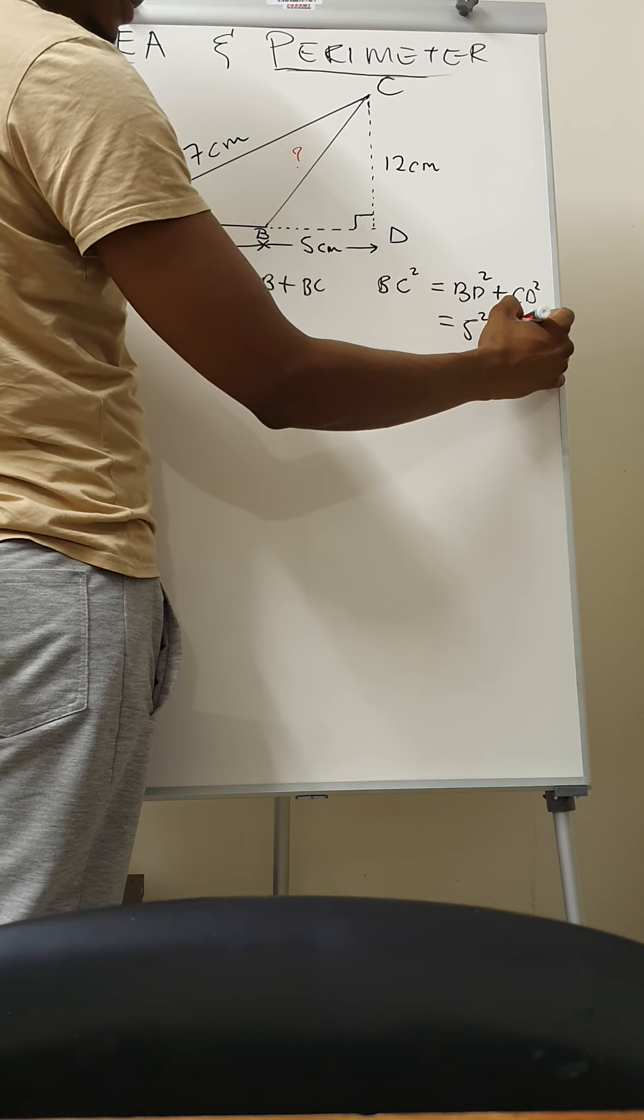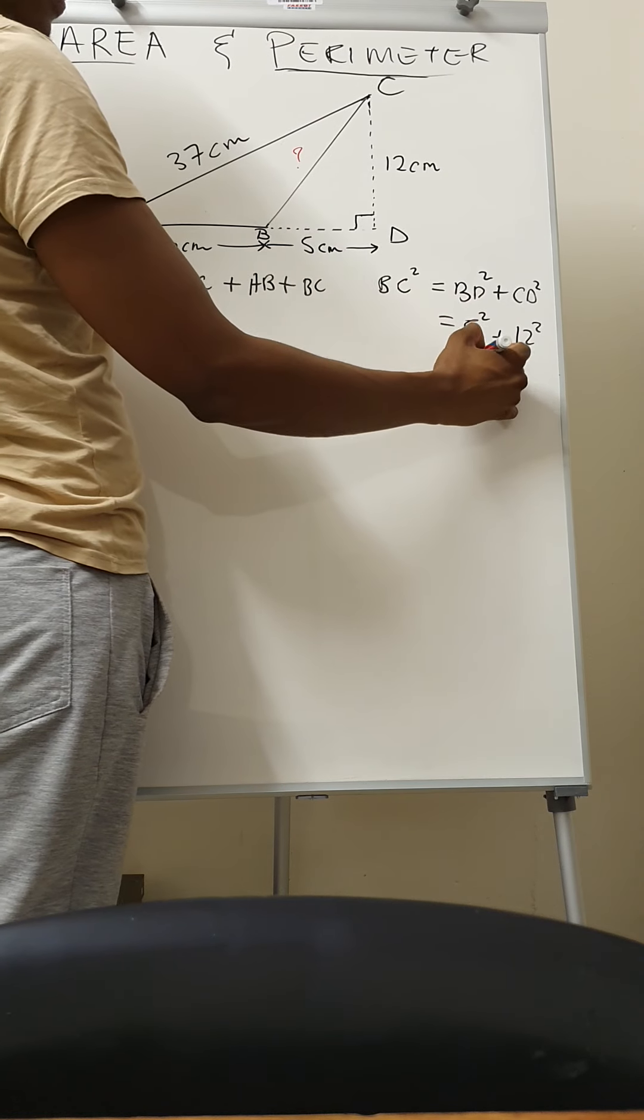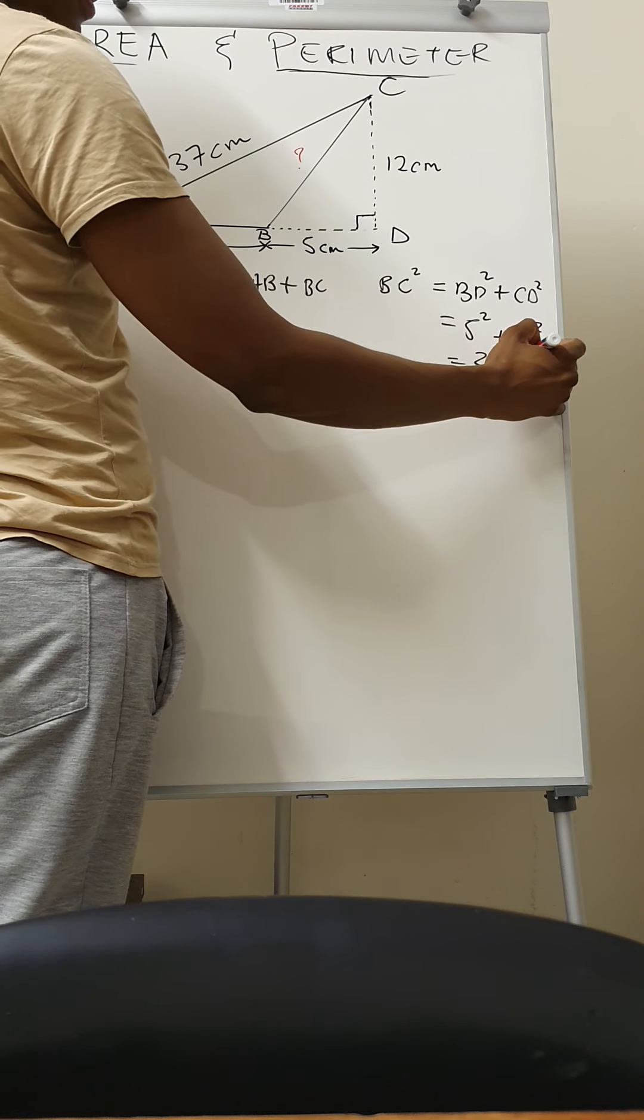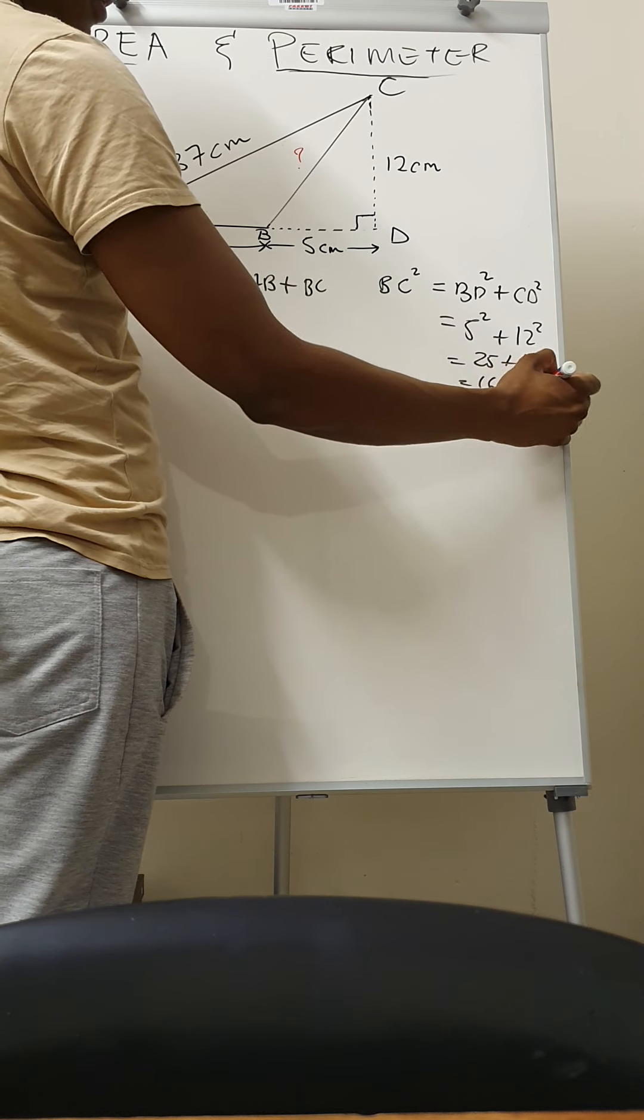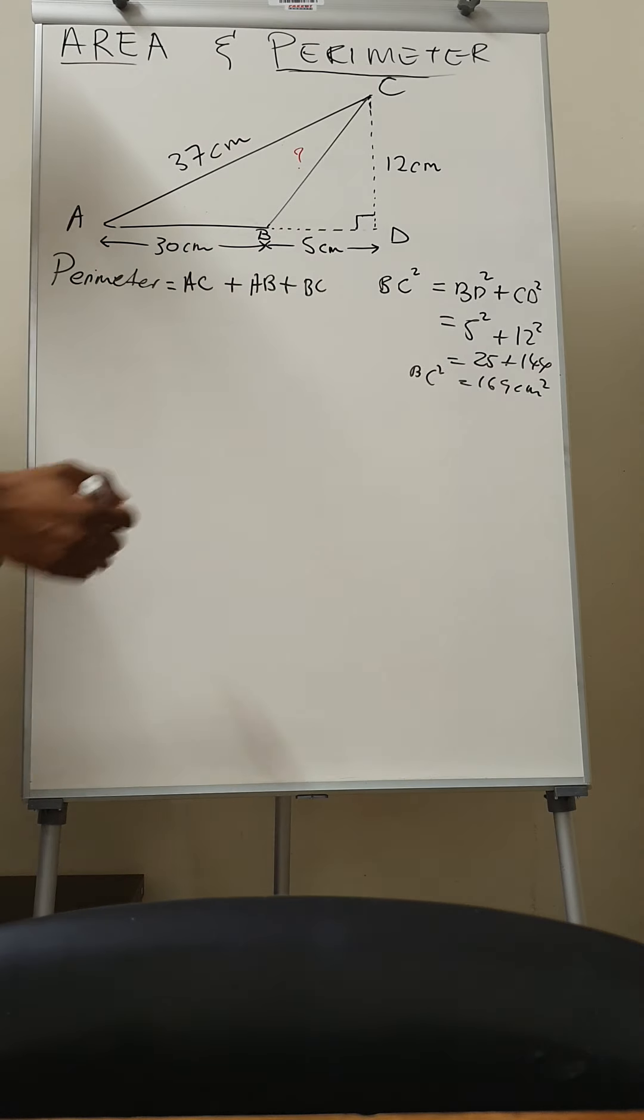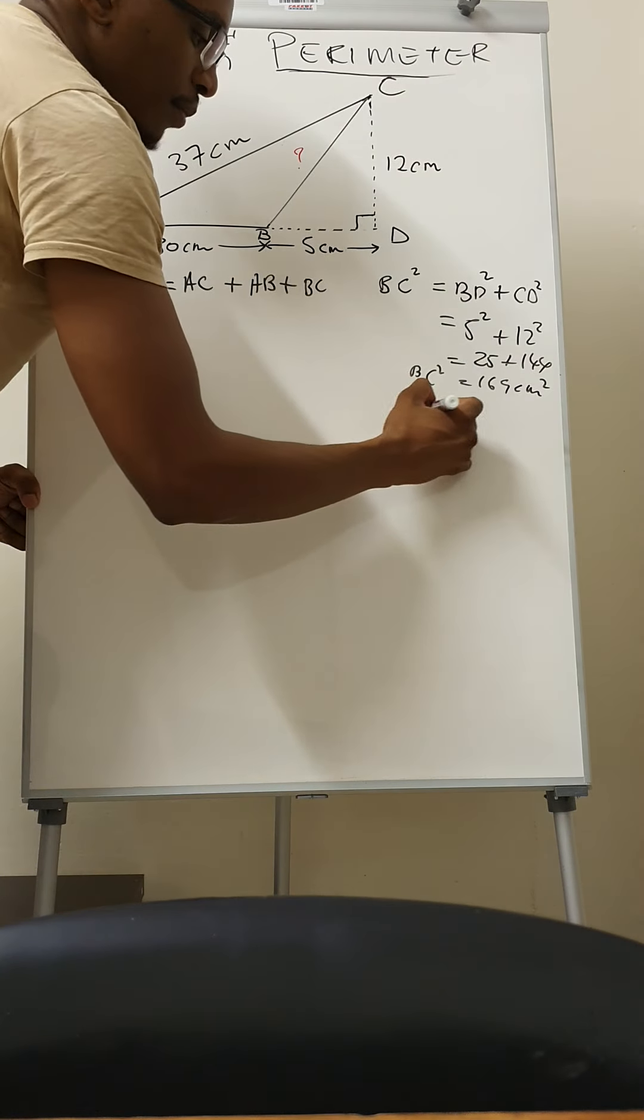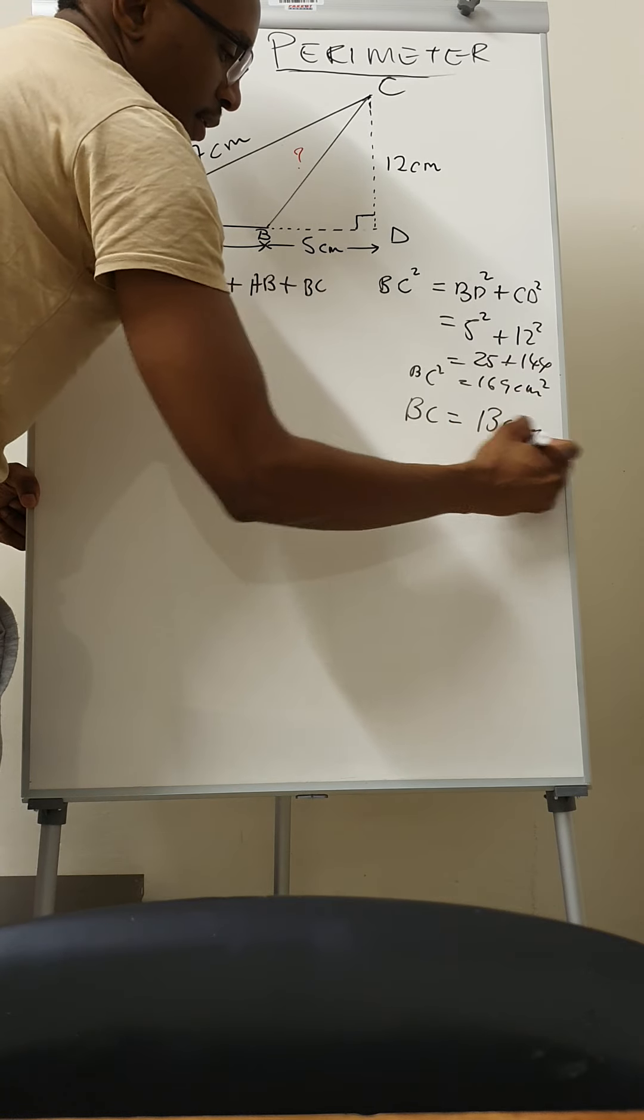So here BD is equal to 5 squared, CD is equal to 12 squared. So that is 25 plus 144, 169 centimeter squared. So you square both sides now, and then you're going to have BC is equal to 13 centimeters.